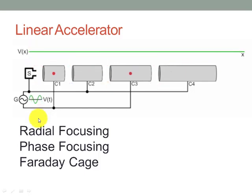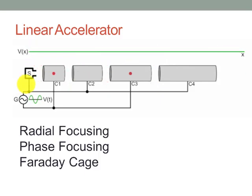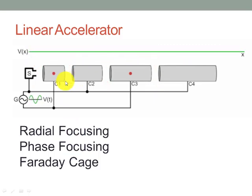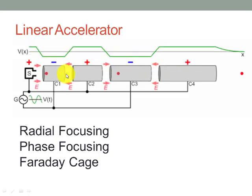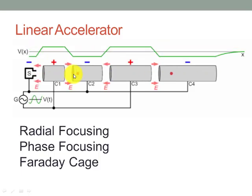Some important factors to mention: the charged particles are injected into the first tube at the moment when its polarity is opposite to that of the particle. The frequency of the oscillating field is adjusted so that the polarity of the drift tube reverses at the moment when the particle reaches the gap between the drift tubes. Two types of focusing are required: radial focusing and phase focusing. Radial focusing directs the charged particle toward the common axis as it crosses the gap between two tubes, because the curved electric field lines may cause the particle to divert from a straight path.